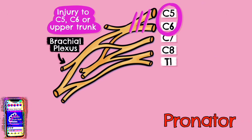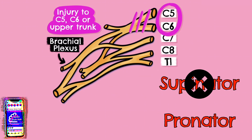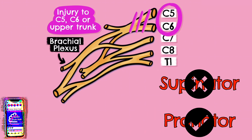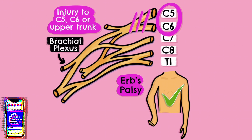Finally, the radial nerve innervates supinator, and with weakness in this muscle our pronator muscle — which is innervated by the median nerve — can work relatively unopposed, pulling the forearm into pronation. All of this combined gives us the classic clinical appearance of the waiter's tip position, with the arm adducted, internally rotated, extended at the elbow and pronated at the wrist. That is Erb's palsy.